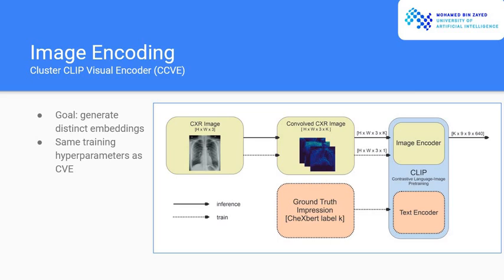The training method is the following. During the training stage, we take an image and we pass it through one of the filters. We have K filters in total. K, in our case it was 13, which corresponds to the labels from the CheXpert library. Then we take the impression section as well of the same image and we get its CheXpert label. So let's say it's label 5. We take the fifth filter output from the convolutional CXR image and we match the filtered image with the impression section using CLIP method.